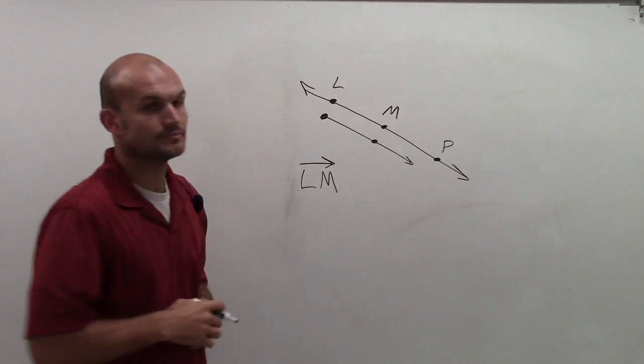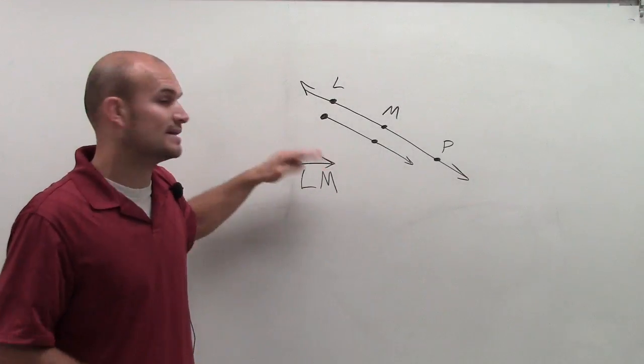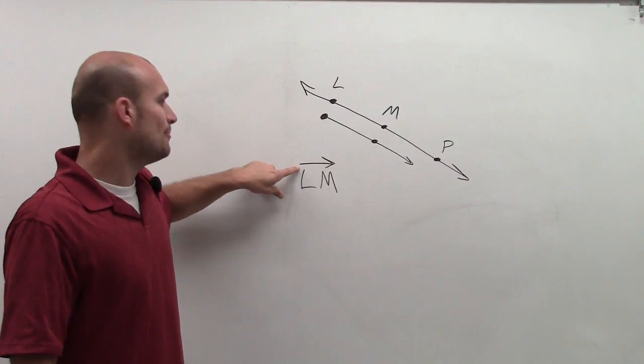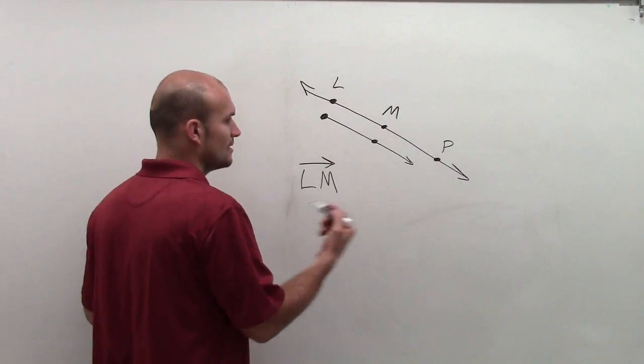And then what I'll do is I'll have a line with only one arrow in it containing that its endpoint is that L, and then it continues infinitely to M.